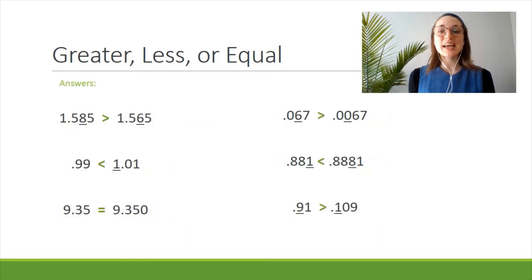Here are the solutions and explanations. 1.585 is greater than 1.565 because the whole number one is the same, the five after the decimal is the same, so we compare the eight and the six. Eight is greater than six. 0.99 is less than 1.01 because whole numbers are always greater than just decimals alone. 9.35 equals 9.350—remember, adding a zero to the end of a decimal doesn't change its value.